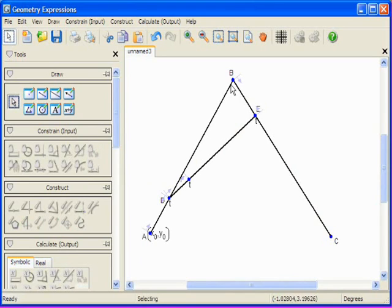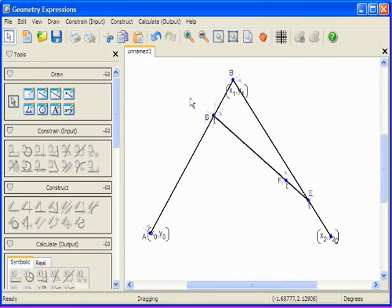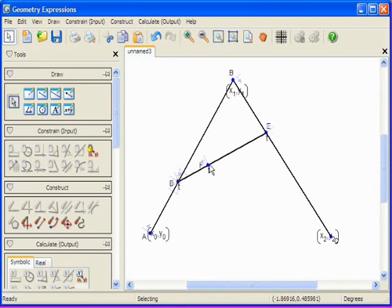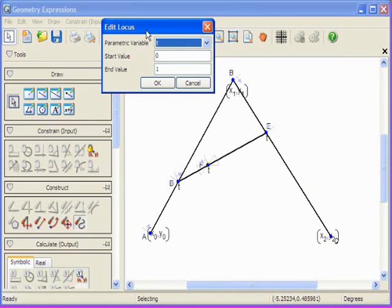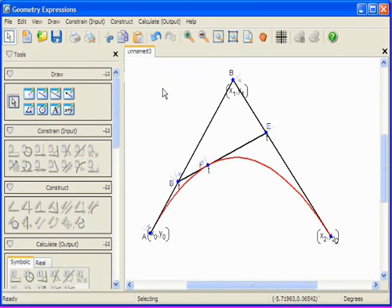Having done that I'm going to constrain A to be X0 Y0, B to be X1 Y1, and C to be X2 Y2. Now as I drag, I see the point F can trace a curve. I will create that locus, T running from 0 to 1.